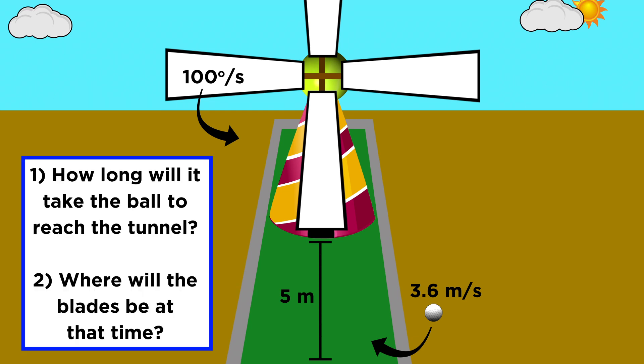So this one is pretty straightforward. We just need to calculate how long it will take for the ball to reach the tunnel, and then figure out how much the windmill has rotated during that time. It's a five meter distance, so five meters divided by three point six meters per second means that it takes one point four seconds to get there.